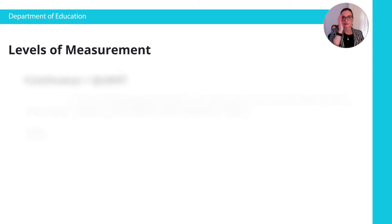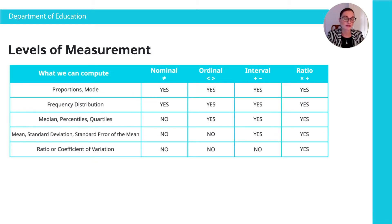Well, that really matters because depending on how we measure our variables and our data, we can then compute different numbers from that. So here we've got proportions, the mode, the middle number, frequency distribution, median, percentiles, quartiles, mean, standard deviation, standard error of the mean, ratio, coefficient, or variation. These are different types of things that you can compute from your data. And depending on the type of data that you've got, you can or cannot compute these different characteristics. And so I've given you the summary table there. If you have nominal data where one is not equal to the other, or ordinal data one is greater than the other, or interval something is 20, 30 is plus 10. I've also summarized here what you can and cannot do with those types of variables.